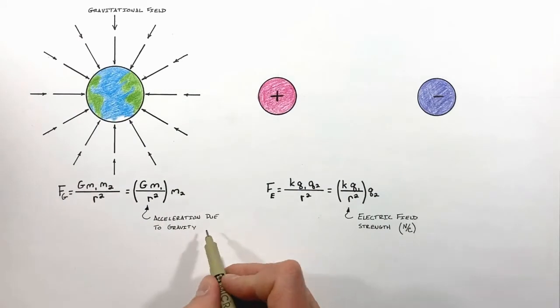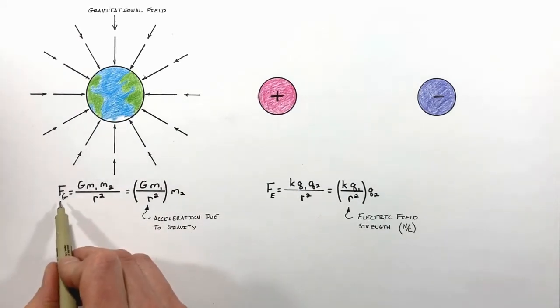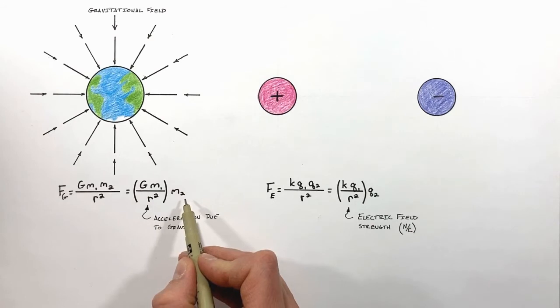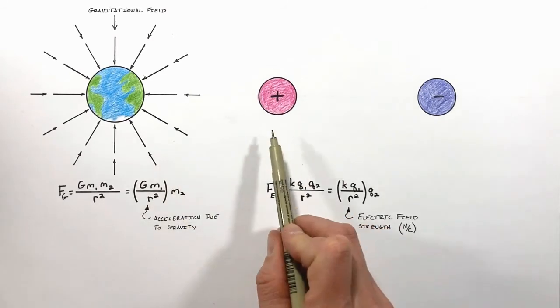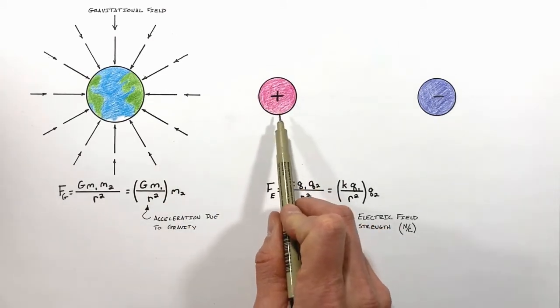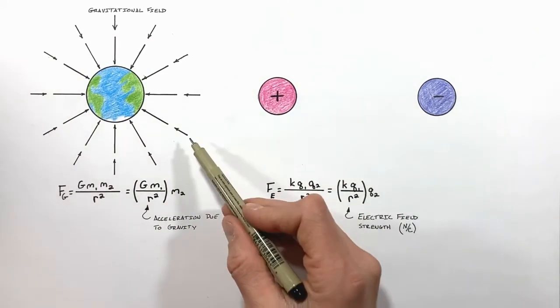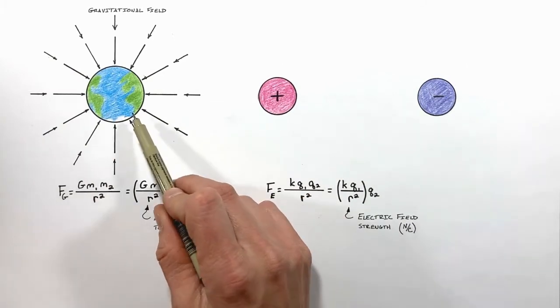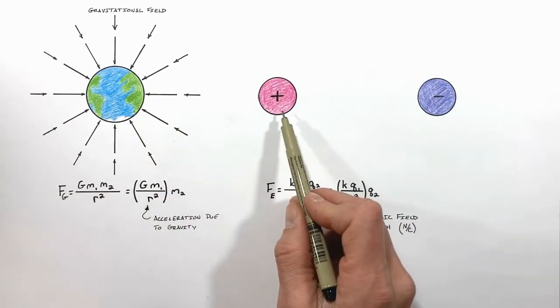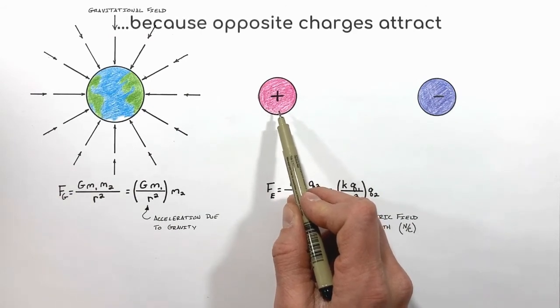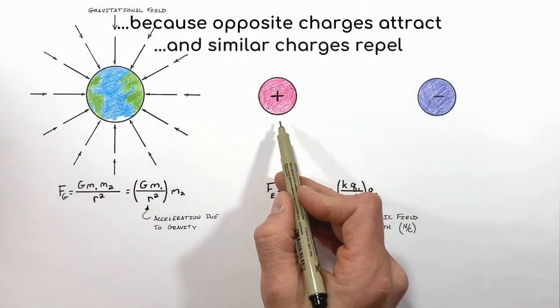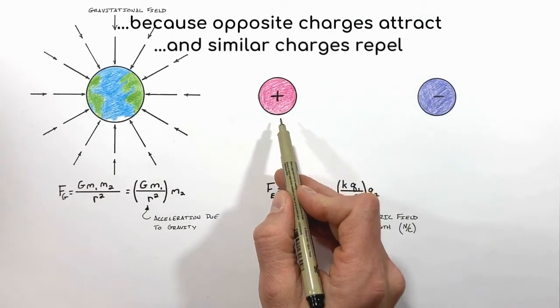Much in the same way the acceleration due to gravity relates the force by gravity to the mass of an object which has been placed in a gravitational field. Just like with a gravitational field, we can map out the electric force around a charge. Now unlike the gravitational force which can only pull two masses together, the electric force can cause two charges to be attracted to one another or repel one another. Because of this, we have to be a little bit careful on how we draw our electric field.